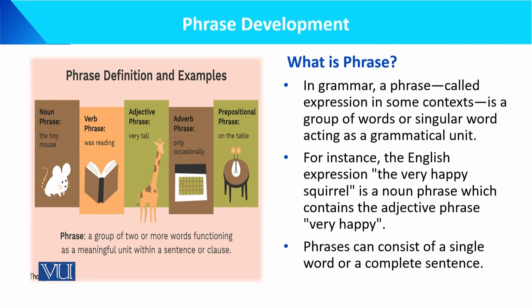So when we develop a phrase, we also use particular principles or rules of grammar. It involves different words that we use in a sentence or unit. For instance, the English expression 'the very happy squirrel' is a noun phrase which contains the adjective phrase 'very happy'.